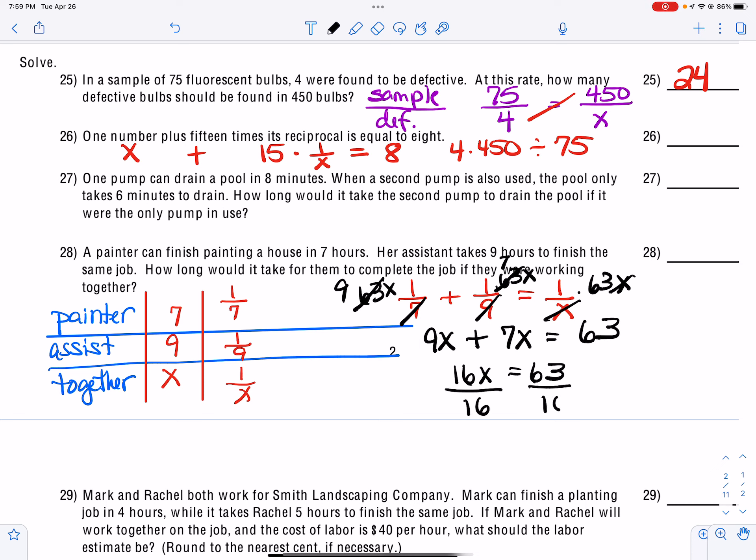And then the X's cancel out and we get 63. So then 9 plus 7 is 16X equals 63. Divide by 16. And so X, and we want to turn it into a mixed number. So if I divided 16 into 63, that would go 3 times. That gives me 48 and that leaves me with 15. So it would be 3 hours and 15 sixteenths of an hour.